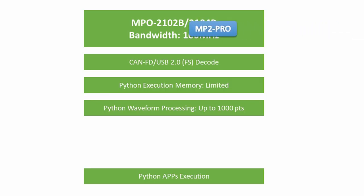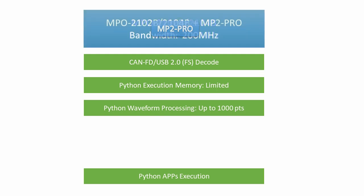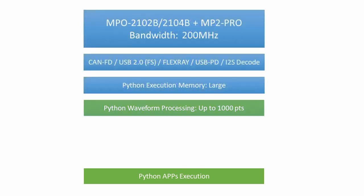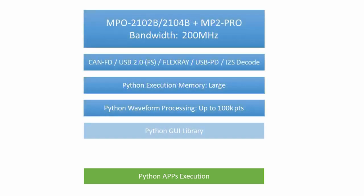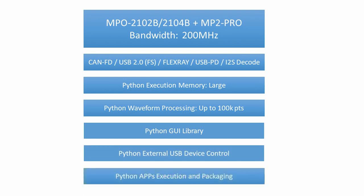MPO-2000 offers optional software upgrades, allowing users to upgrade the MPO-2000B's bandwidth and functionality to match those of the MPO-2000P. With its 5-in-1 functionality and Python script execution capability, MPO-2000 can help improve work efficiency and is the optimal choice for engineers.